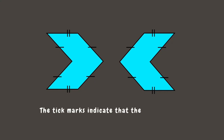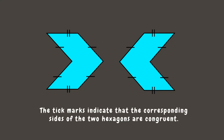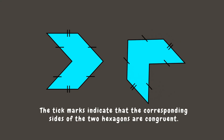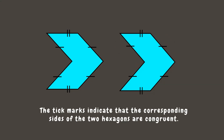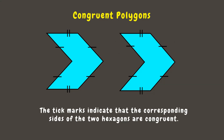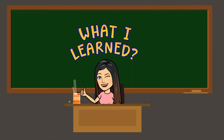What do you think — are they congruent polygons or not? The tick marks indicate that the corresponding sides of the two hexagons shown are congruent, and we can see that they have the same shape and size. The other one is just a rotated or flipped version, therefore they are congruent polygons. That's all for today — here are the things that you learned.